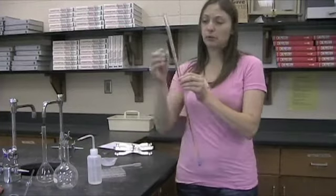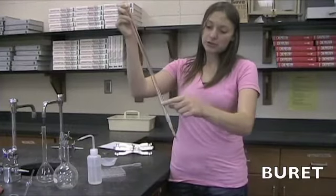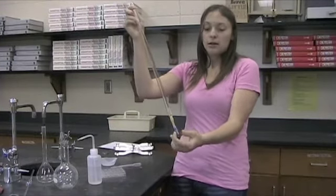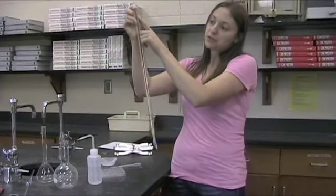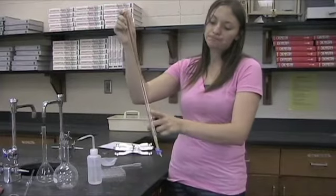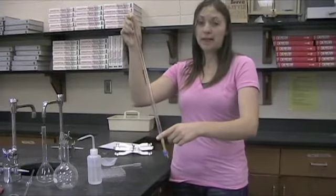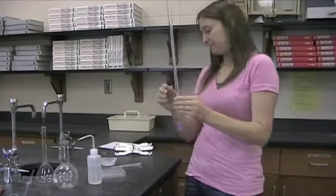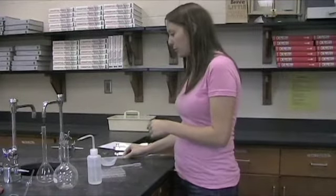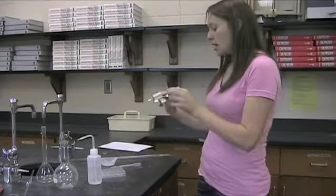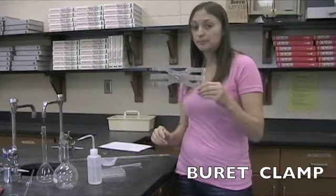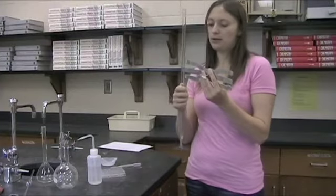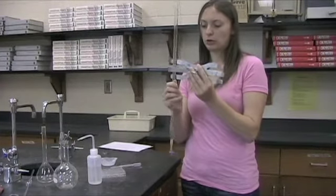We have a burette which has lots and lots of little graduations on it. And then down here at the bottom it has what's called a stopcock. What happens with these is you will dispense a certain amount of liquid into a beaker or a flask. And they are often used for what are called titrations. Well, in order with a burette, you have what's called a burette clamp. And the burette fits right inside. And that way you don't have to worry about holding onto it.